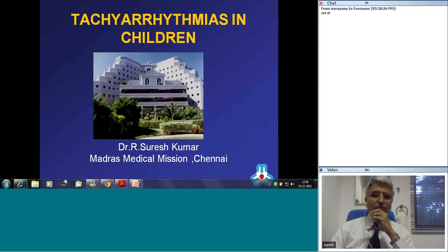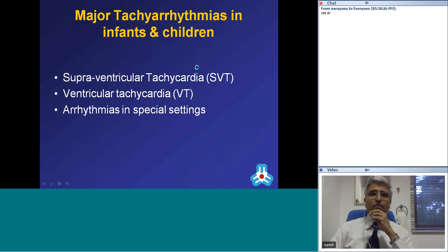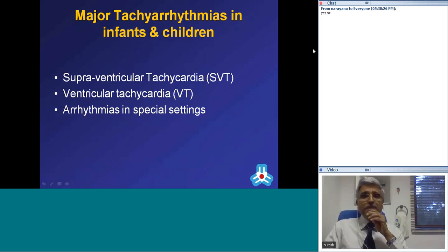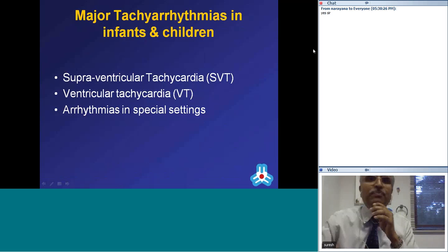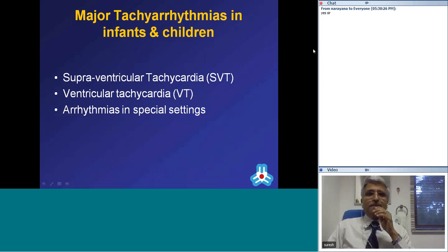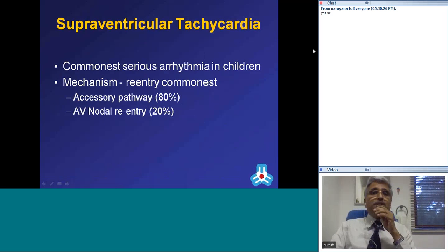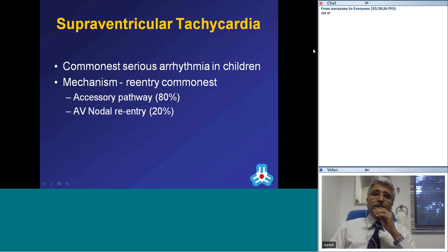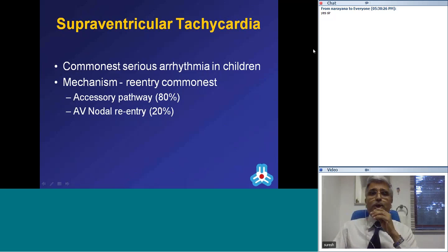When you look at tachyarrhythmias in infants and children, you can look at three types of tachycardia: supraventricular tachycardia and ventricular tachycardia, but when they occur in special settings we deal with them separately. SVT is the commonest serious arrhythmia in children. The mechanism is re-entry, mediated by an accessory pathway in 80% of children, and in 20% it is AV nodal re-entry. The younger the child, the more likely it is an accessory pathway mediated tachycardia; the older the child, the greater the likelihood of AV nodal re-entry.